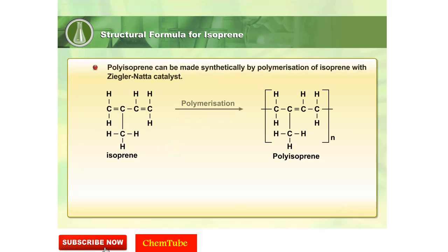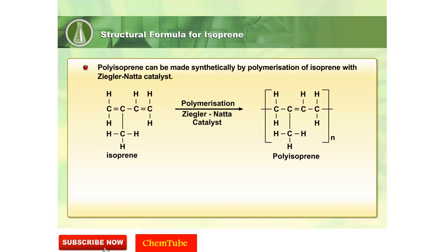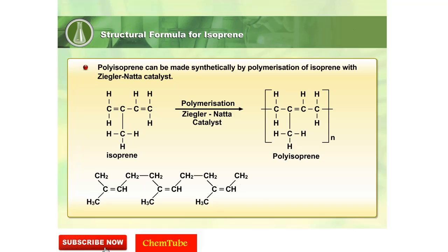Isoprene molecules are polymerized with the help of Ziegler-Natta catalysts. The brackets and the letter N show that the structure is repeated over and over again to form a long chain.